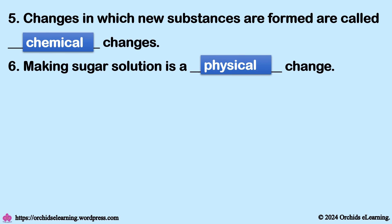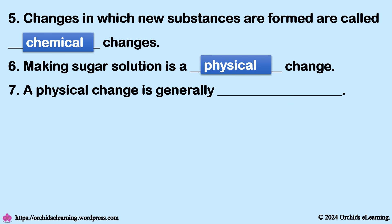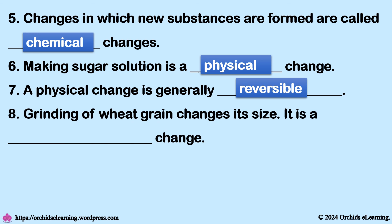Making sugar solution is a physical change. A physical change is generally reversible. Grinding of wheat grain changes its size — it is a physical change.